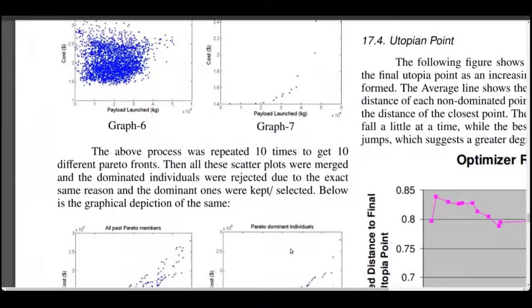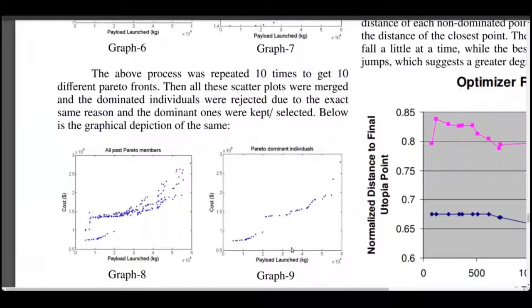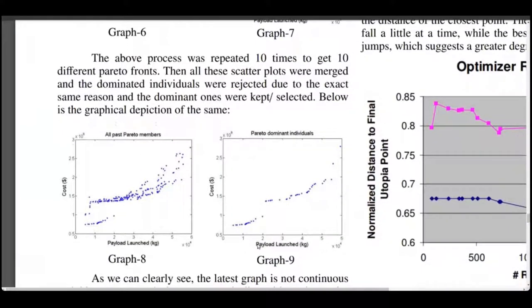When this process was repeated for 10 times, the fronts were combined yielding the graph on the left. Now, the non-dominated individuals were chosen and the plot on the right was obtained showing us the best of the best models. As is the case with random point generation, we rarely obtain a smooth curve.